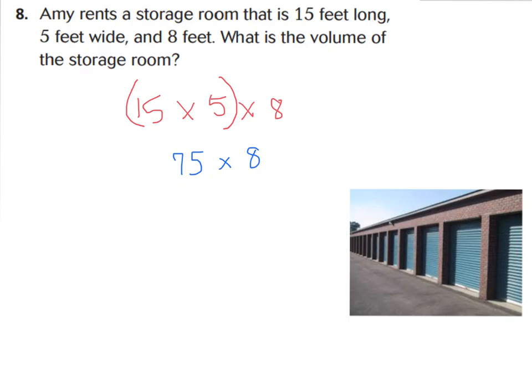You're going to multiply it by 8 feet to get your height. So 75 times 8—I'm going to do my distributive property. I'm going to break apart my 75 and do a 70 and a 5, and I'm going to multiply both of those by 8, my height, to find my volume.